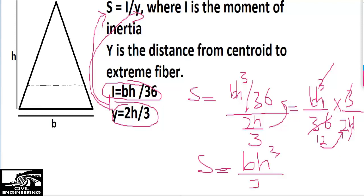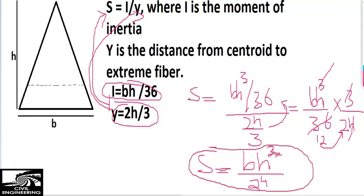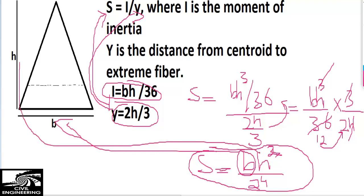So the result becomes BH²/24. This is the section modulus of any triangle, where B represents the width of the triangle and H represents the height of the triangle. We can find the section modulus of any triangle using this formula.